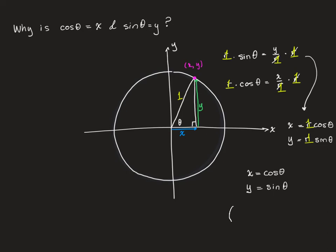When you see cosine theta comma sine theta used for coordinates, it's because those coordinates are coming from the unit circle, the circle with radius 1.